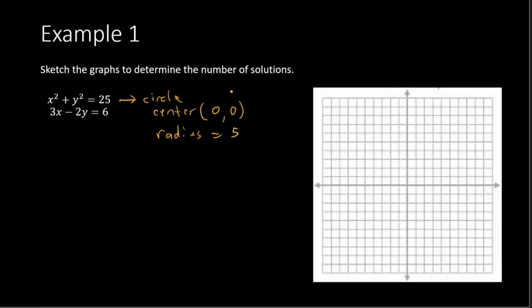The radius is the square root of 25, which is 5. So the center is at (0, 0), and we go up 5, left 5, down 5, and right 5 to plot the four key points. Connecting those gives us our circle.